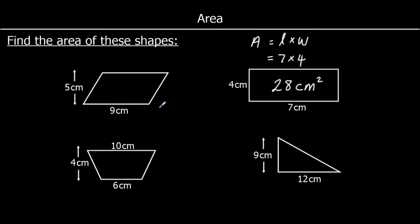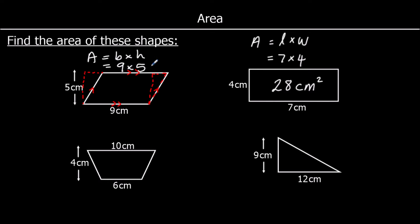For a parallelogram — this shape has two sets of parallel sides; the bottom and top are parallel, and the two sides are parallel. The area of a parallelogram is the base times the height, the same as a rectangle. If you cut one end off and moved it to the other side, it would become a rectangle. It's the base times the perpendicular height, not the diagonal. So area equals base times height, which is nine times five, giving 45 centimetres squared.